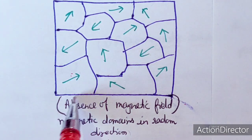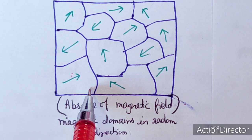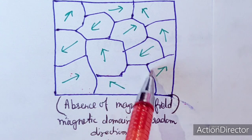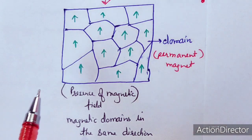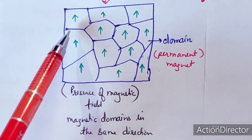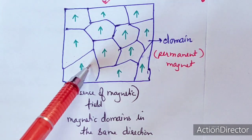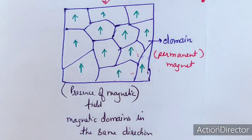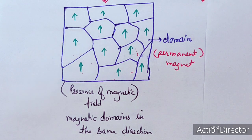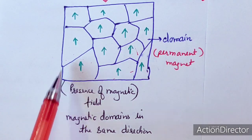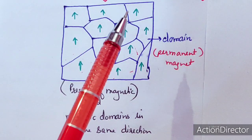In absence of a magnetic field, all magnetic domains are in random directions. After applying the field, they align in the same direction, giving net magnetic moment. For example, pure iron is not strongly magnetic, but when placed in a magnetic field its domains align and it becomes a permanent magnet. There will then be a net magnetic moment.